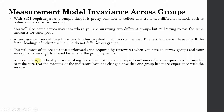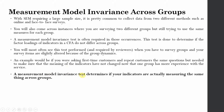As an example, let's say you were asking first-time customers and repeat customers the same questions. In order to make sure that both groups perceive and understand the indicators in a similar manner, you need to perform measurement model invariance. A measurement model invariance test determines if your indicators are actually measuring the same thing across groups — that is, the understanding of the indicators and statements does not change with the change of groups.